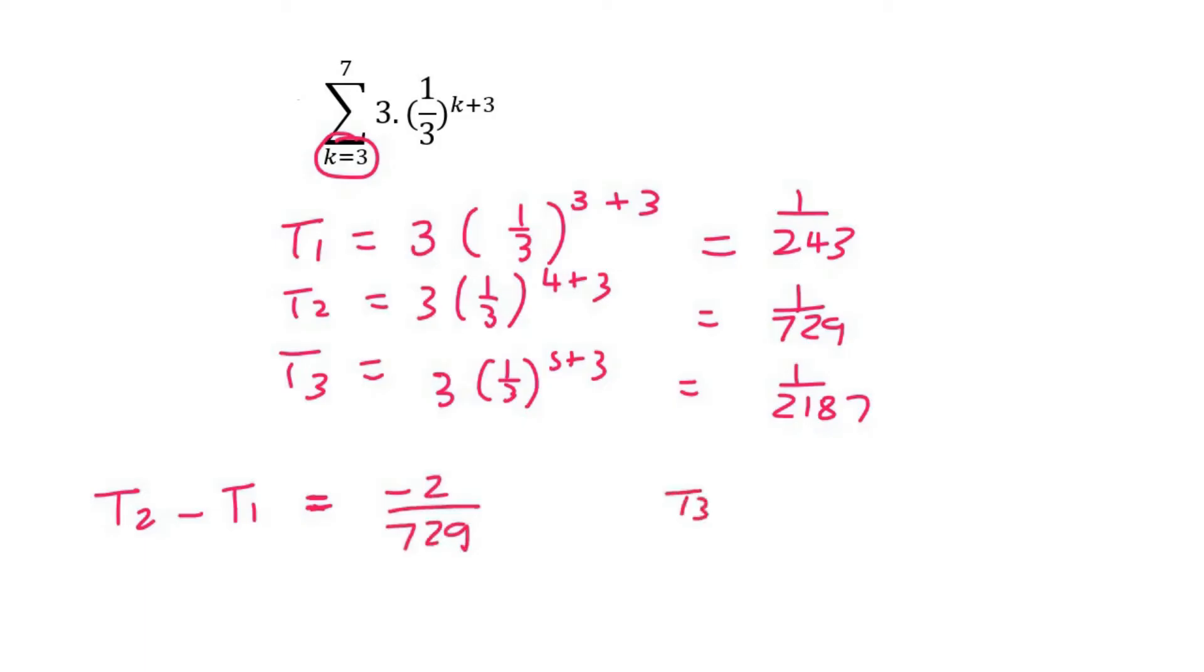Now we go to t3 minus t2, and we're going to see if this stays constant. So it's going to be 1 over 2187 minus 1 over 729, and no, it's not constant. You can see that we get a different answer. So the difference is not staying the same.